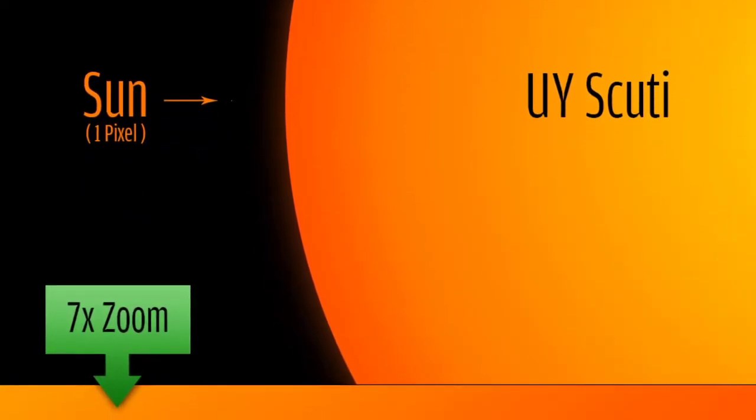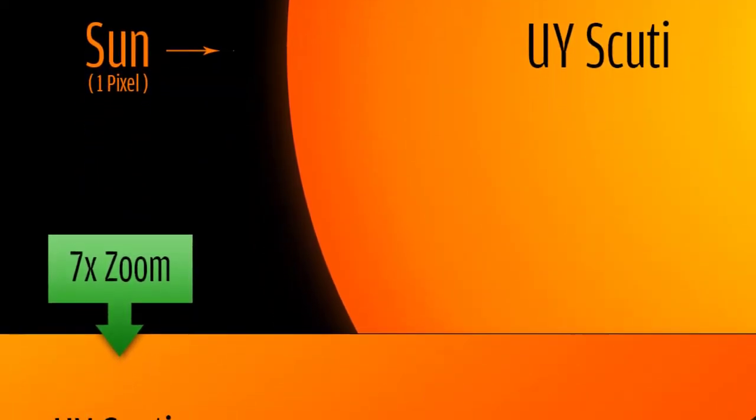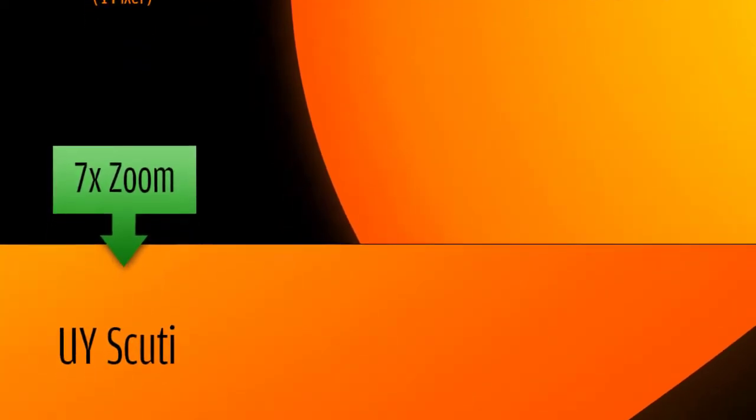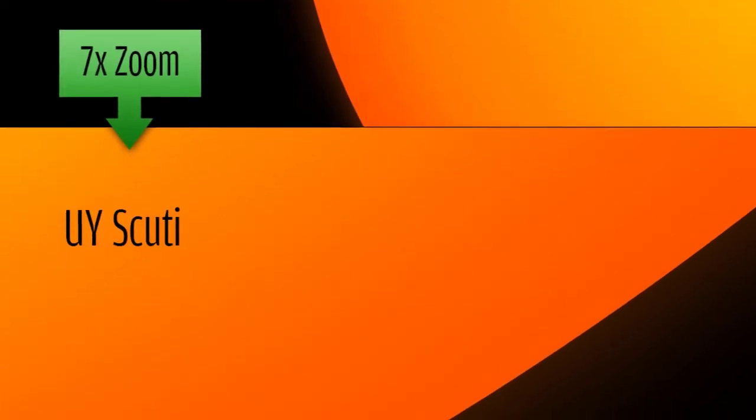If placed at the center of the solar system, its photosphere would at least engulf the orbit of Jupiter. UY Scuti was first cataloged in 1860 by German astronomers at the Bonn Observatory who were completing a survey of stars for the Bonner Durchmusterung stellar catalog.